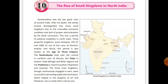Now the question is: why did Harsha's empire break into many kingdoms? Let's discuss the reasons one by one. The first reason was miserable economic condition — the rulers did not have enough money to manage the expenses of court, army, and other administrative works properly. The second reason was lack of proper administration.